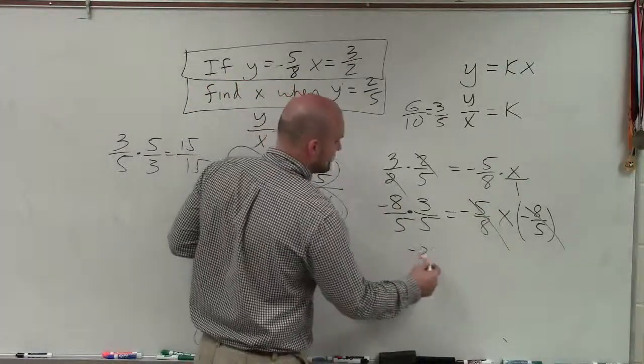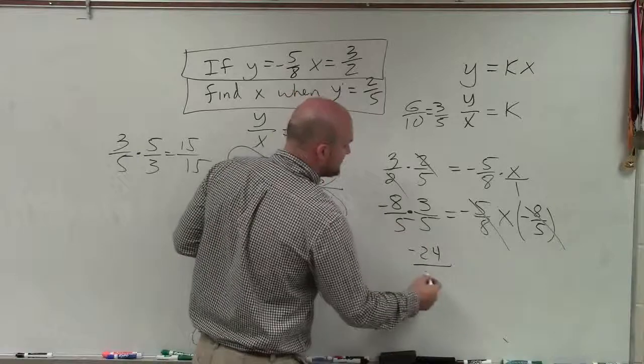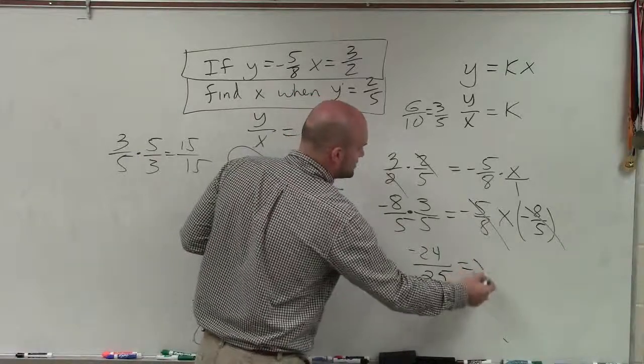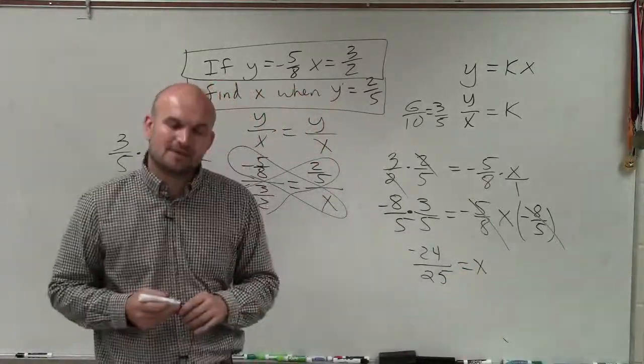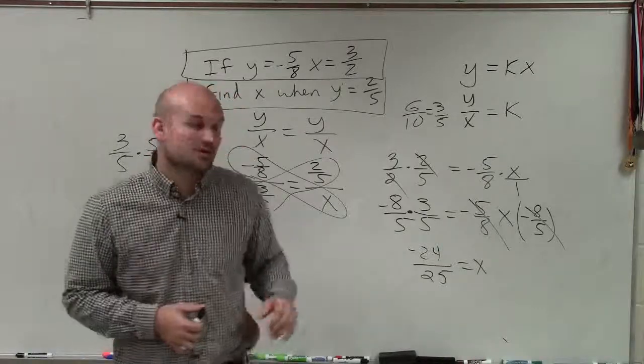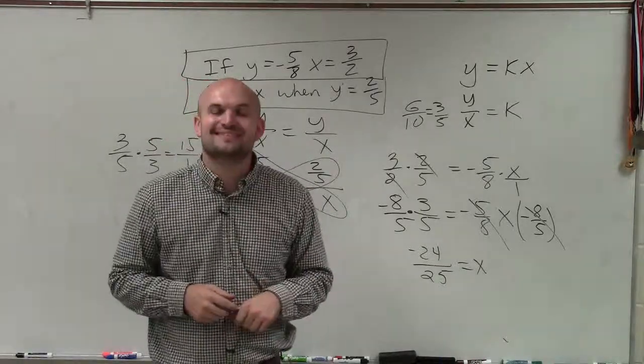Negative 8 times 3 is negative 24 over 5 times 5, which is 25, which is equal to x. So there you go, ladies and gentlemen. That is how you use a proportion to determine your missing value for direct variation. Thanks.